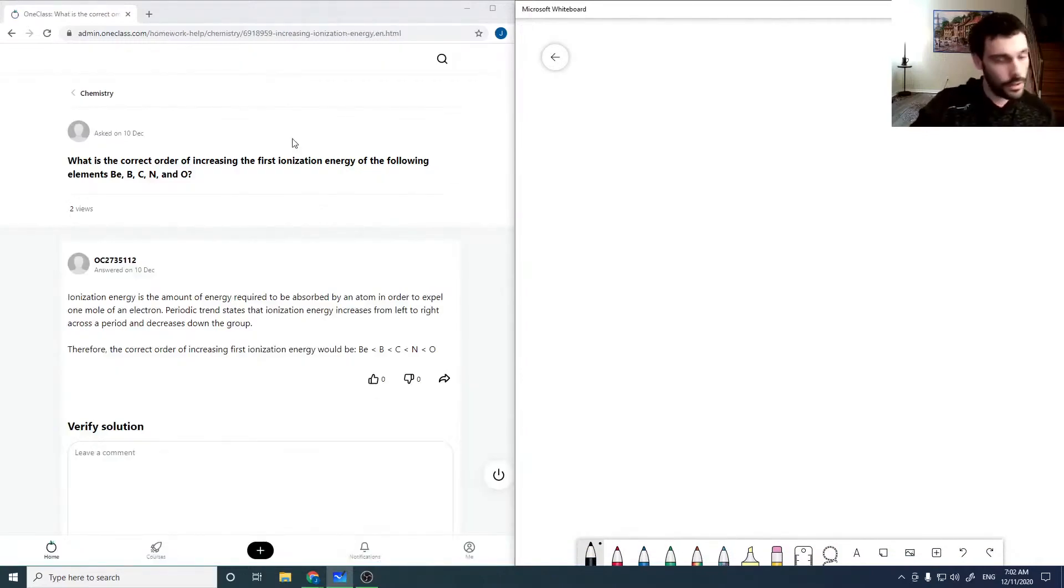What is the correct order of increasing first ionization energy for the following elements? Looking at a periodic table, we'll notice that these go right across our second row. Beryllium is 1s² 2s².